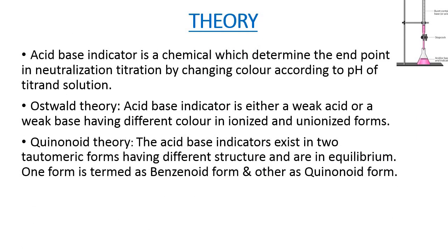What is the theory behind this practical? Acid-base indicator is a chemical which determines the end point in neutralization titration by changing color according to pH of the titrant solution. There are two types of theories: the first is the Oswald theory and the second is the quinoid theory.